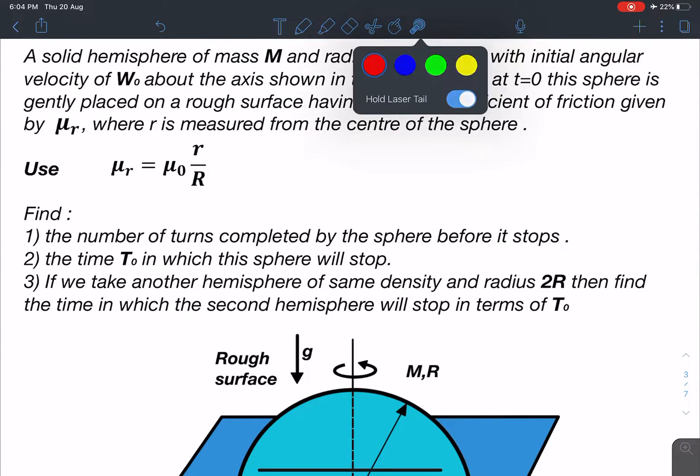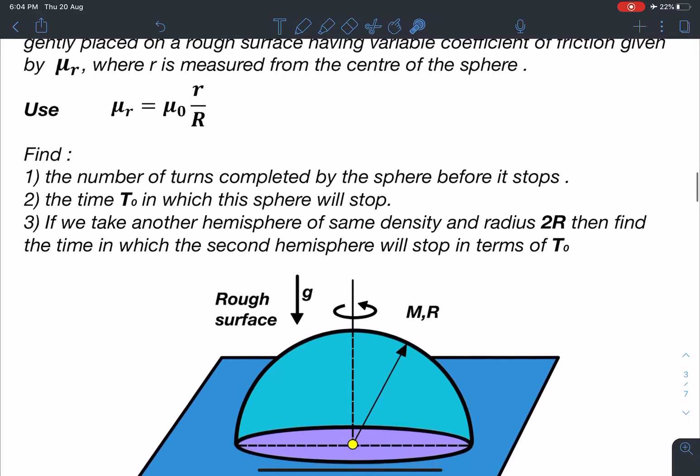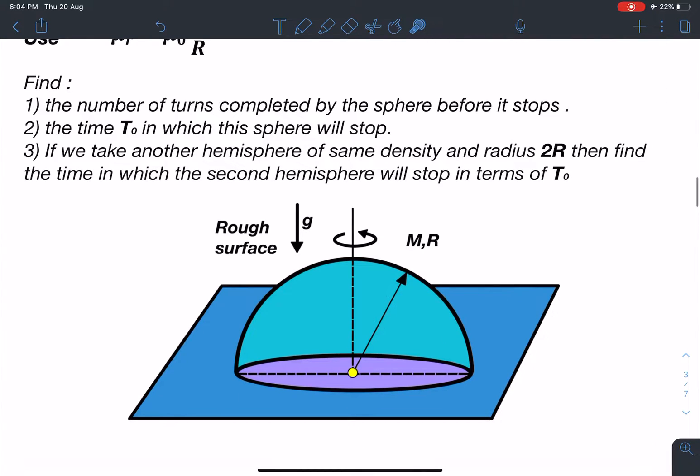Now here you can see there are three parts. First one is the number of turns completed by this sphere before it stops. Second, the time T naught in which the sphere will stop. And third, if we take another hemisphere of same density and radius 2R, then find the time in which the second hemisphere will stop in terms of T naught.